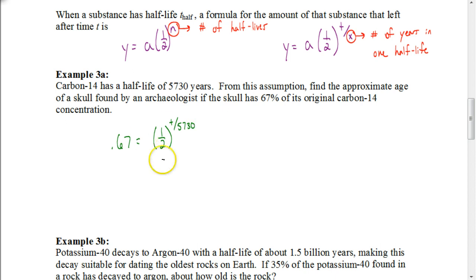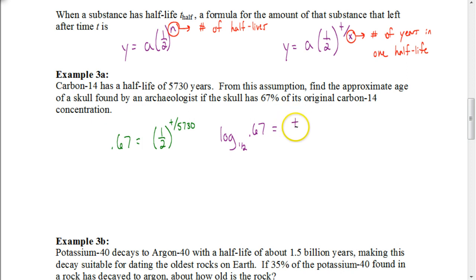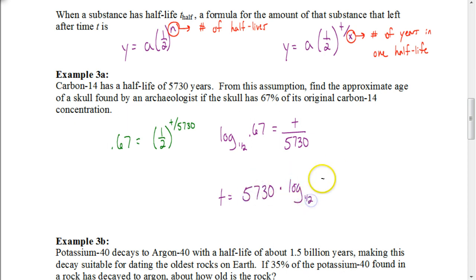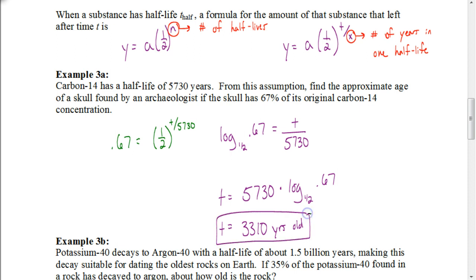This is an exponential equation where our base is already by itself. Writing it in logarithm form: the log base one-half (or 0.5) of our value 0.67 equals our exponent, which is T divided by 5,730. To figure out what T is, multiply both sides by 5,730. When you do that on your calculator, you get an answer of approximately 3,310 years old — that is how old that skull would have been.